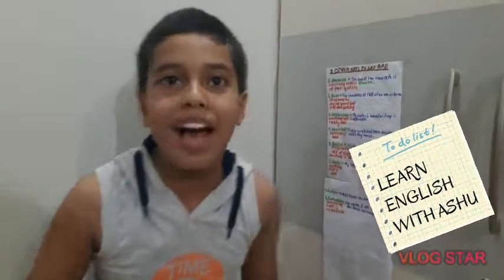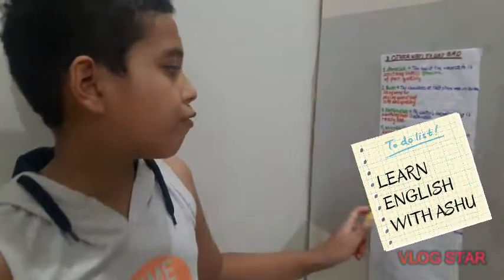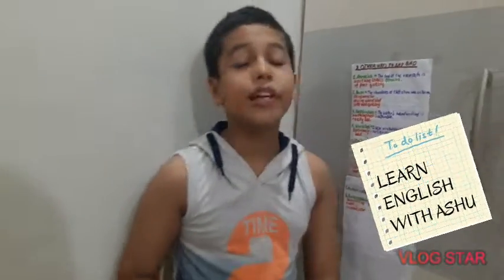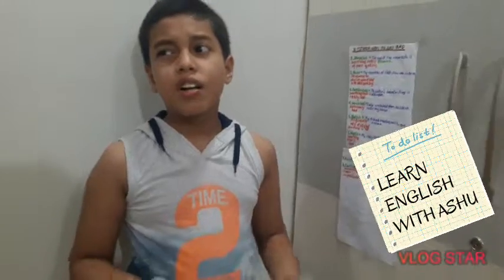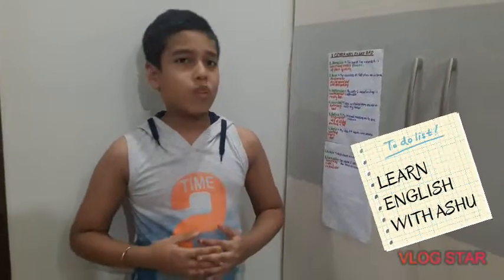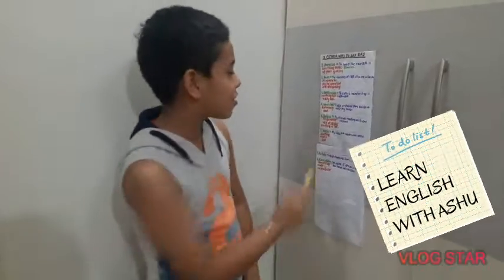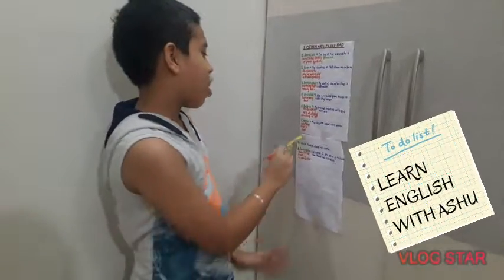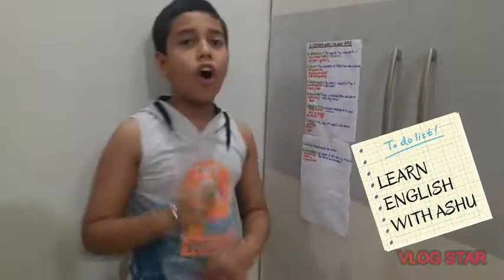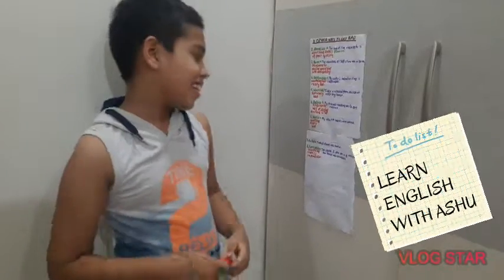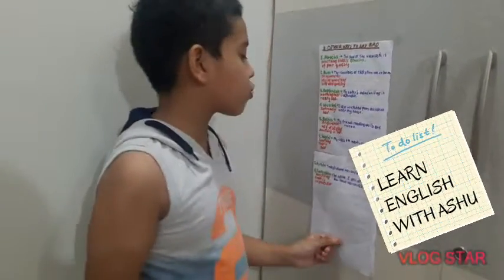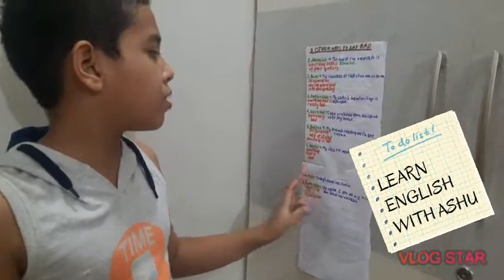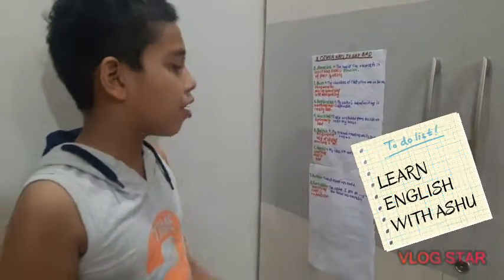Our next word is 'awful'. Awful means something that is bad, so instead we can say: 'My class fourth marks were awful.' You have heard me say awful many times because it is a very useful word we can use instead of saying bad. The example for awful is: 'Today's dinner was awful.'